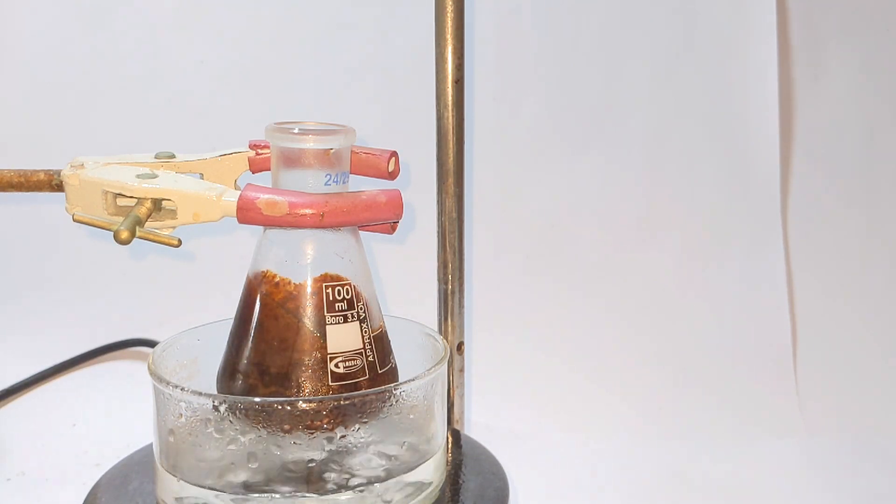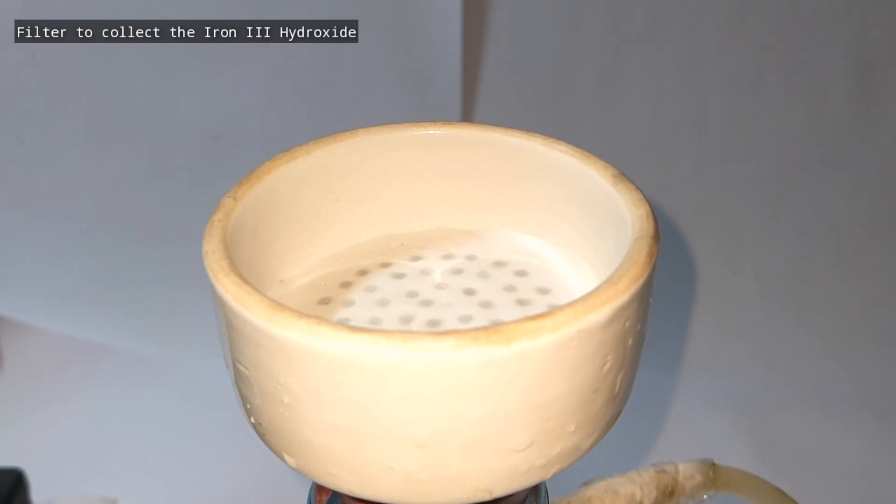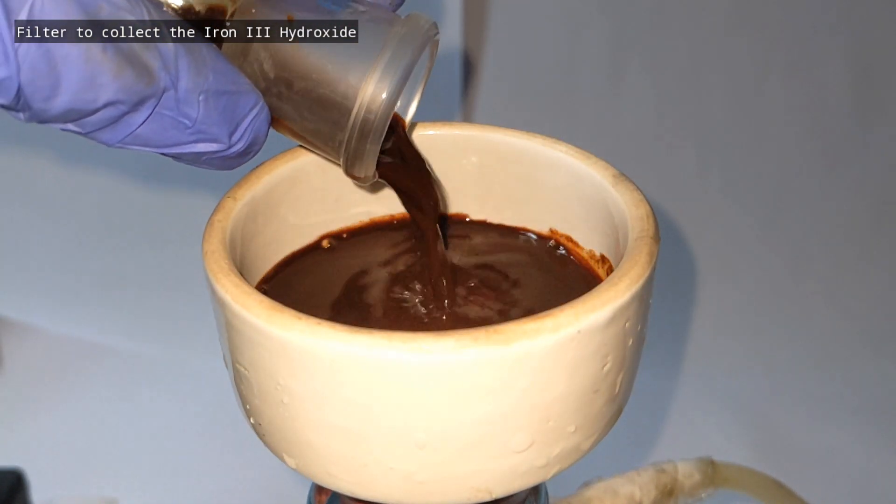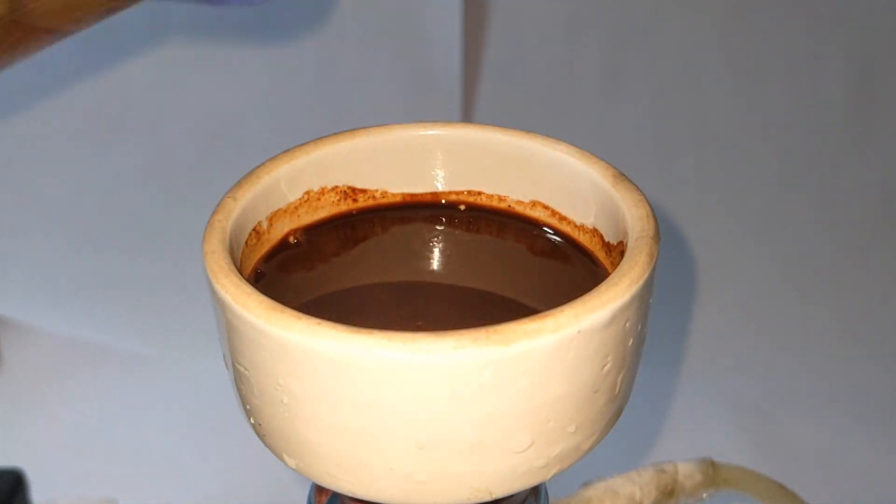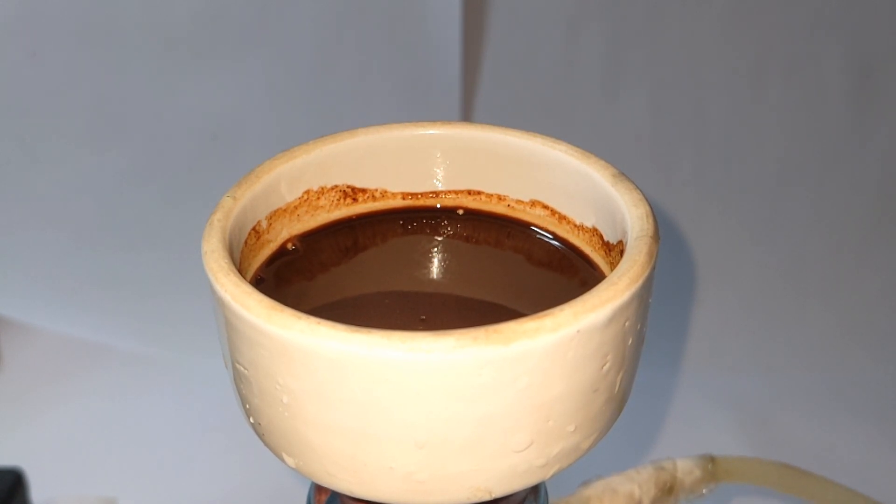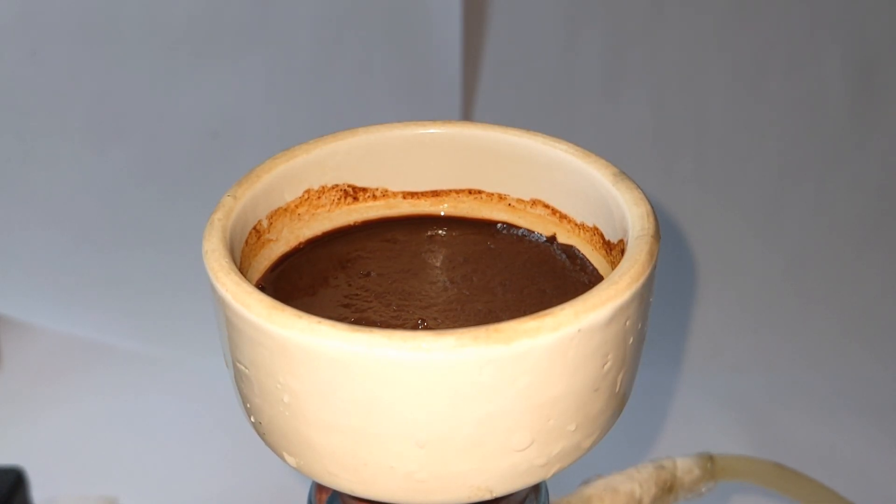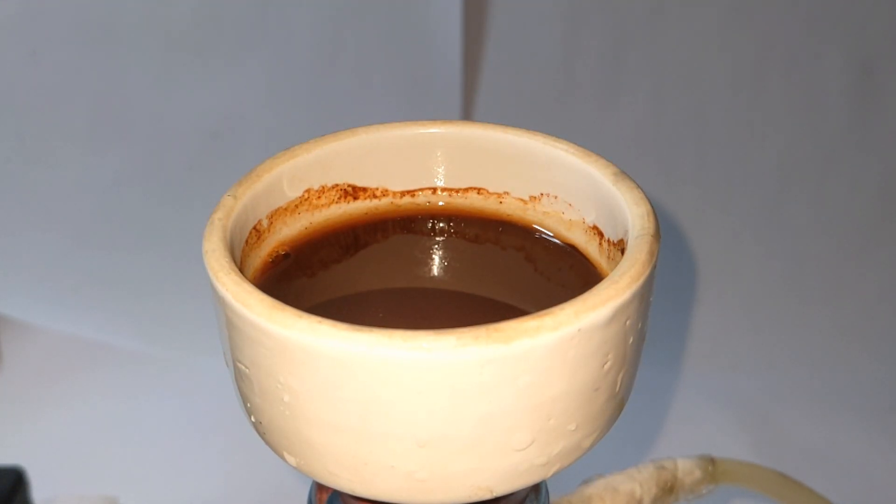After 20 minutes, the complete precipitation of iron(III) hydroxide was ensured. Then the precipitate was separated using vacuum filtration. The precipitate was then washed a couple of times with distilled water. This will remove all the unreacted iron(III) chloride and the side product ammonium chloride from the precipitate.